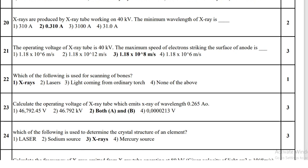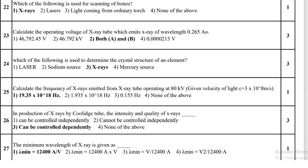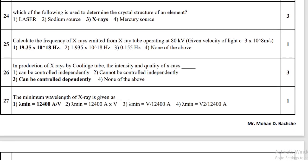X-rays are used to determine the crystal structure of elements. Calculate the frequency of x-rays emitted from an x-ray tube operating at 80 kV; using the velocity of light, the frequency is 19.35 × 10¹⁸ hertz.